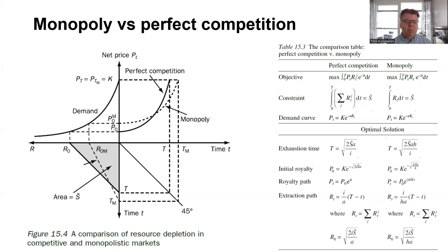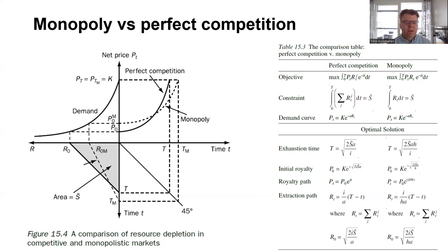This might give at least some support that in some situations, a monopoly is not necessarily a bad idea. We can also see this in the bottom left quadrant — the monopoly initially starts to exhaust the reserve in smaller amounts, and the reserve continues to be available for a longer time.